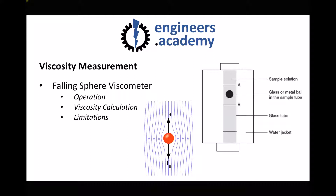It's important to understand some limitations. First, we can only really use this method for a translucent fluid, because otherwise we wouldn't be able to locate the ball. But aside from that, this is a relatively versatile way of measuring the viscosities of different fluids.